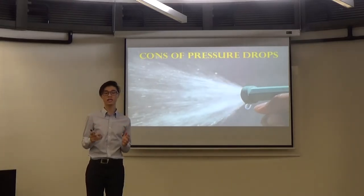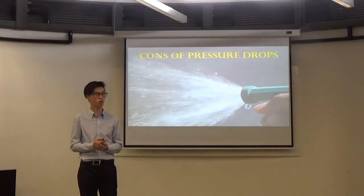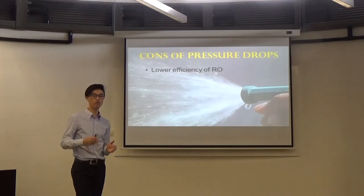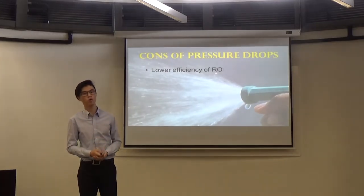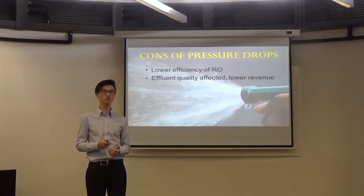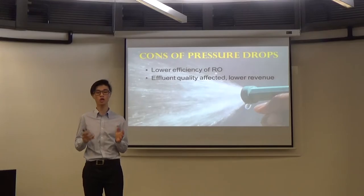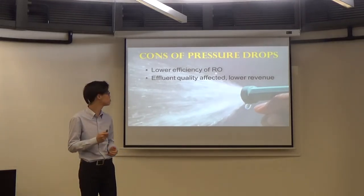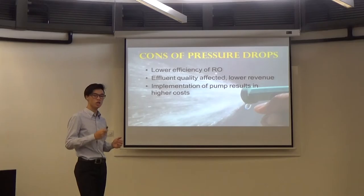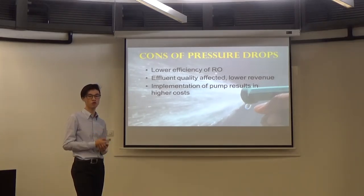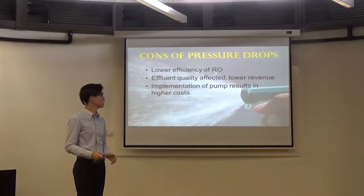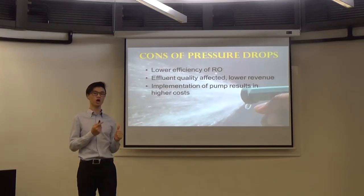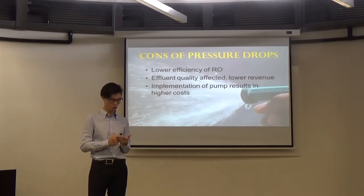So what exactly are the cons of pressure drops? Firstly, it lowers the efficiency of the reverse osmosis process, reducing effluent quality and hence lowering the revenue earned from it. The implementation of a pump is often used as a countermeasure, resulting in higher costs in the form of higher operating costs and higher capital costs.